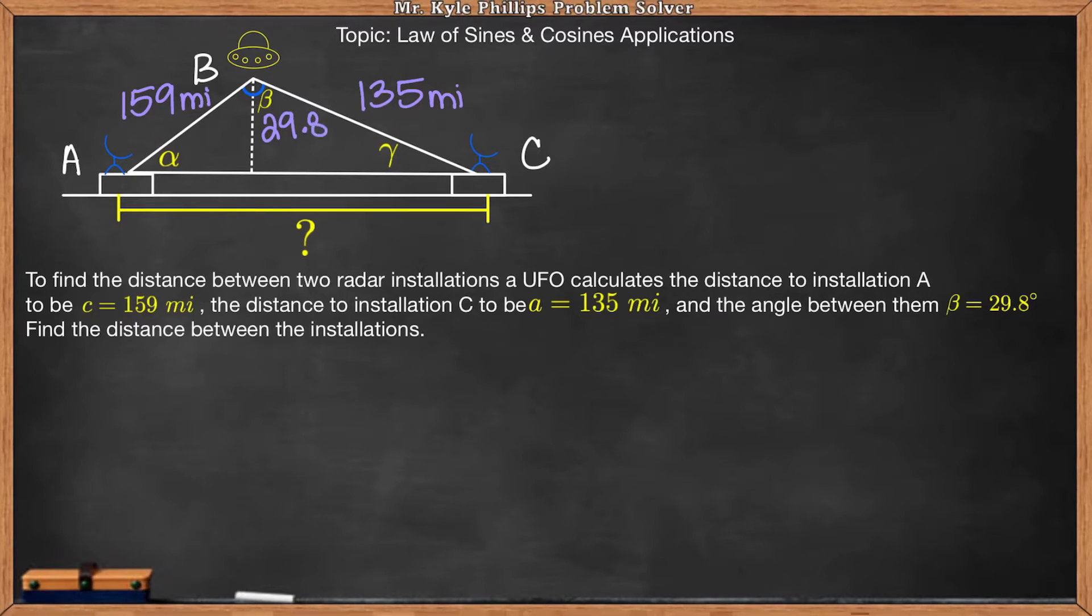Find the distance between the installations. So here, what I'm given is a side length, an angle, and another side length. So the postulate that is given is side angle side. So because of that, that means I am going to have to use the law of cosines. So because I am looking for leg B here, I'll use the law of cosines formula that's set up in terms of leg B.